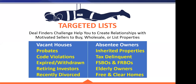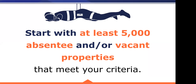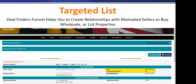Sometimes you can stack motivations — for example, a vacant house that's also in pre-foreclosure. That's called list stacking. You want to start your marketing with at least 5,000 absentee and/or vacant properties because you need to fill the top of your funnel with enough prospects so that as they contact you and you follow up, you have enough people in the pipeline to actually trickle down to a deal.